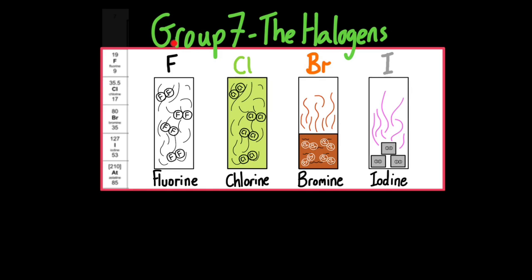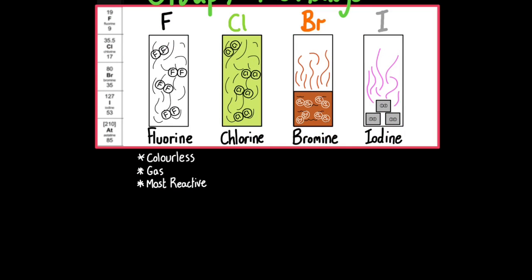The halogens are the group seven elements. You can see them under group seven in your periodic table. They are fluorine, chlorine, bromine, iodine, and astatine. You will not really need to discuss astatine. In a school lab, you'll probably see chlorine, bromine, and iodine, but fluorine, because it's so highly reactive and dangerous, you would not find. So let's compare their properties.